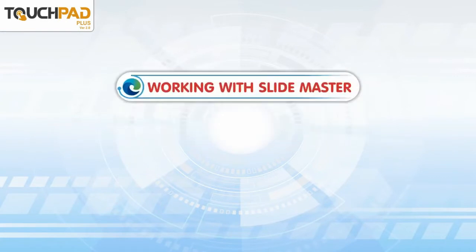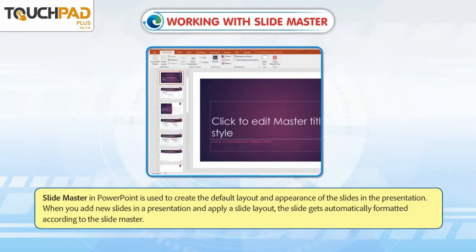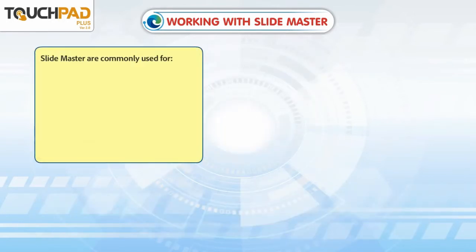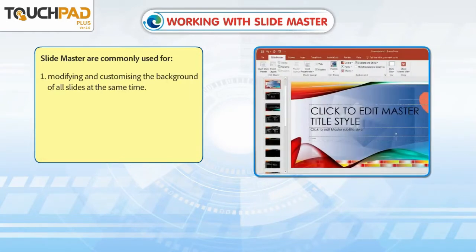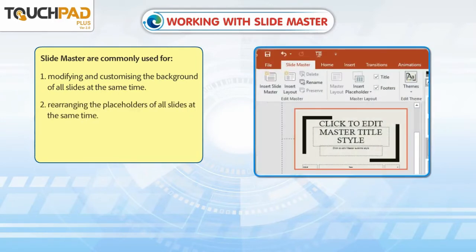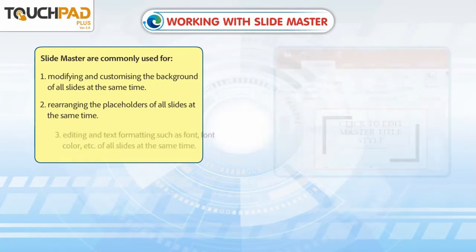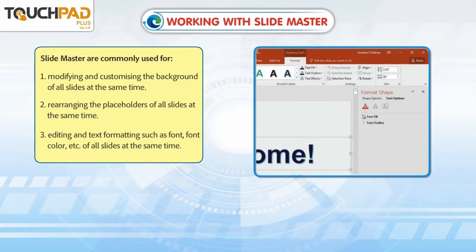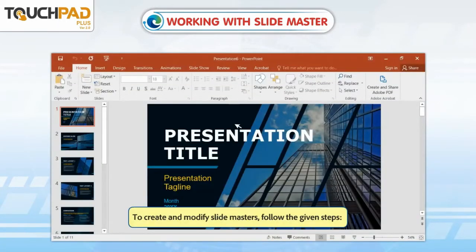Working with Slide Master. Slide Master in PowerPoint is used to create the default layout and appearance of the slides in a presentation. When you add new slides and apply a slide layout, the slide gets automatically formatted according to the Slide Master. Slide Masters are commonly used for: 1. Modifying and customizing the background of all slides at the same time. 2. Rearranging the placeholders of all slides at the same time. 3. Editing and text formatting, such as font and font color, of all slides at the same time.